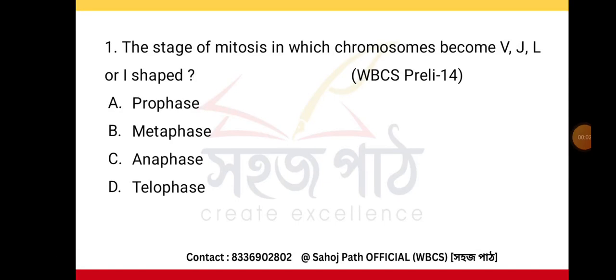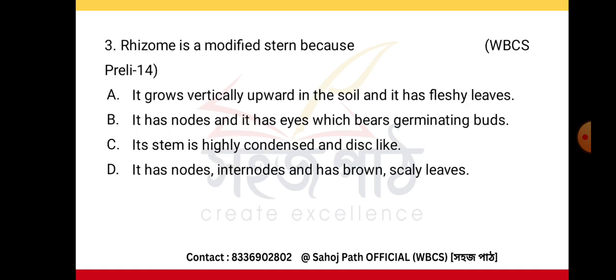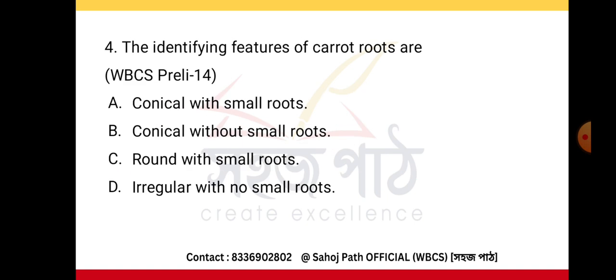Subscribe to get the latest video updates. The stage of mitosis in which chromosomes become V, J, L or I-shaped is anaphase. The digested food is absorbed in the small intestine. Rhizome is a modified stem because it has nodes, internodes, and brown scaly leaves.